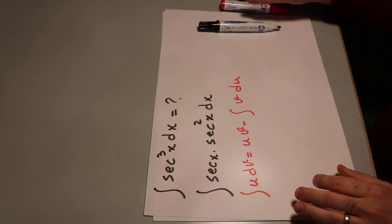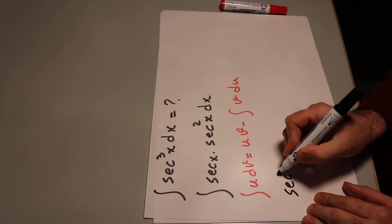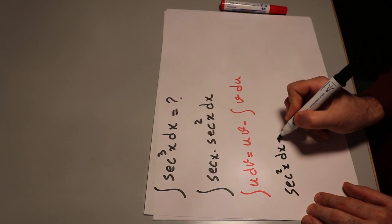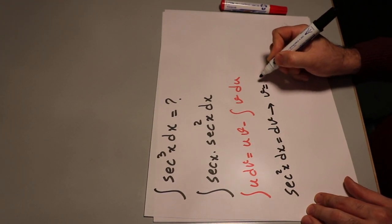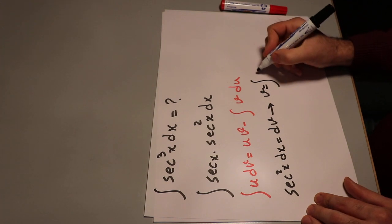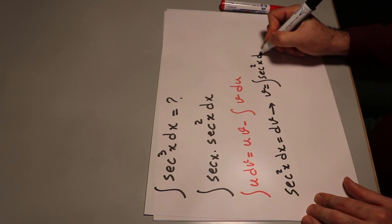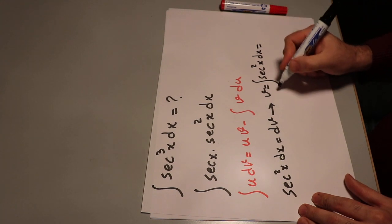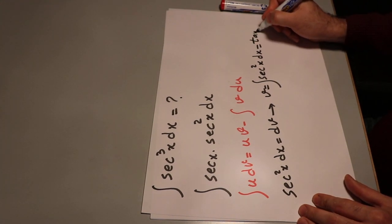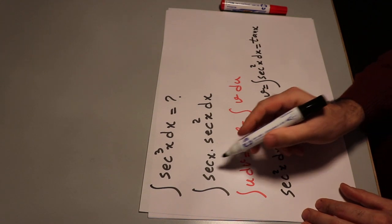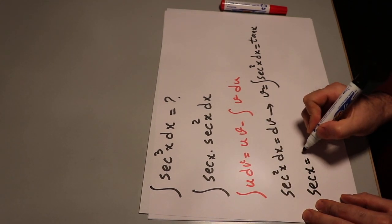Here I define secant²x dx as dv, therefore v will be equal to the integral of secant²x dx. And from a table of integrals you know this integral is equal to tangent x. And I define secant x as u.